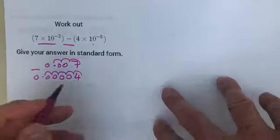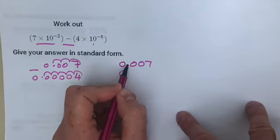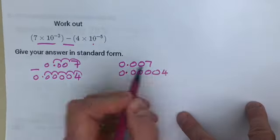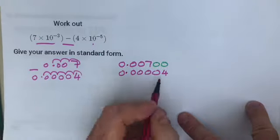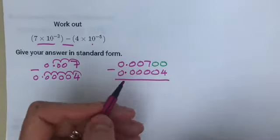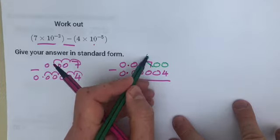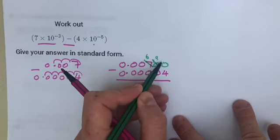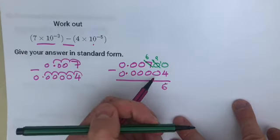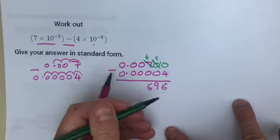The decimal points aren't lined up, so line them up: 0.007. Count 1, 2, 3, 4 from there, with the 4 on the end. Fill in zeros and do the subtraction. Zero take away four - we can't do that, so we go across to the 7: take one off making it 6, add ten to the units making 10, put 1 to the end. Ten take away 4 is 6, then 9 take away 0 is 9, 6 take away 0 is 6, and the rest fills in with zeros.